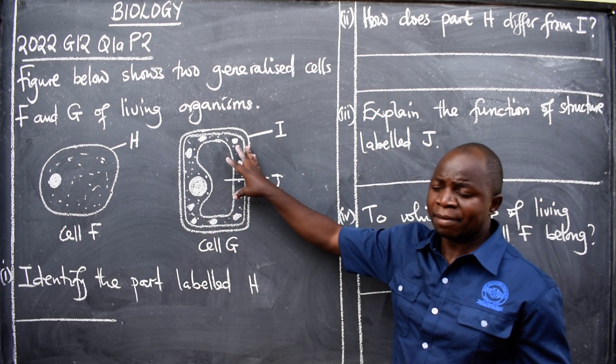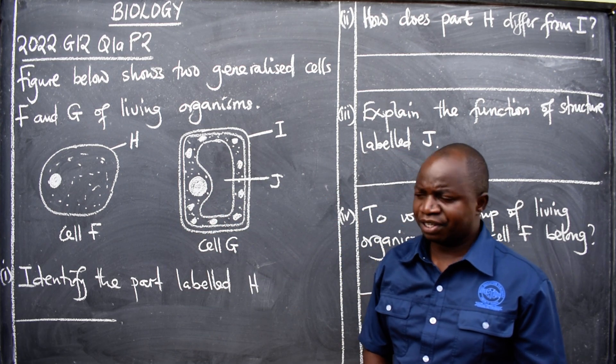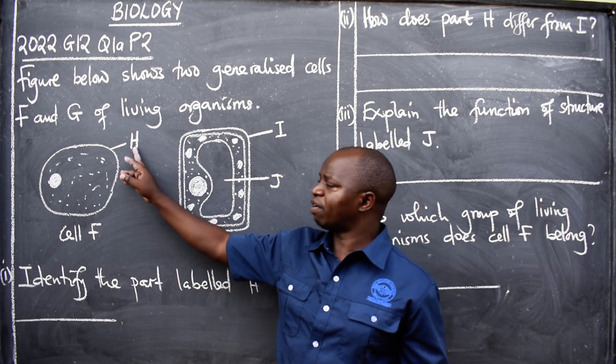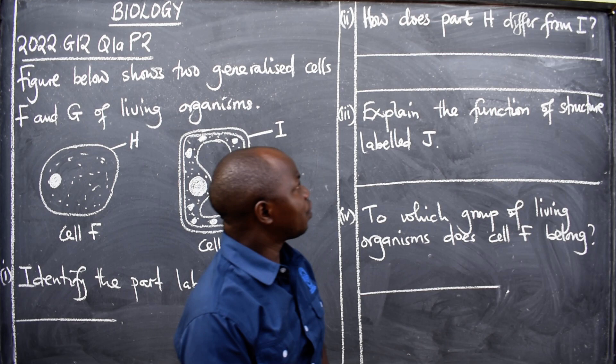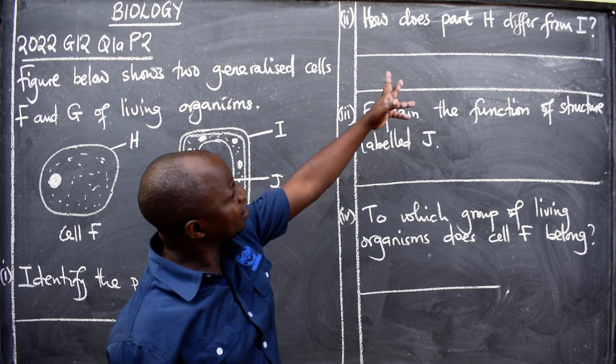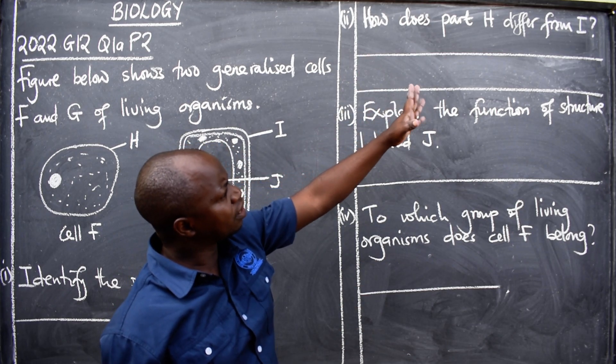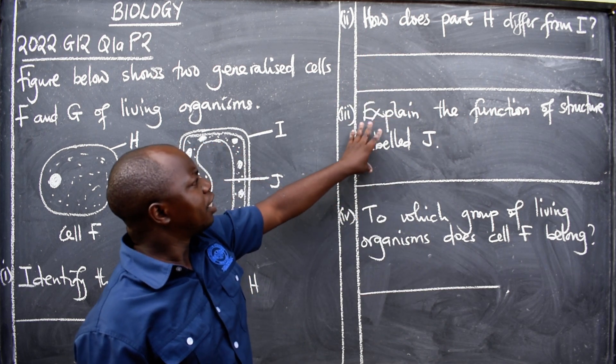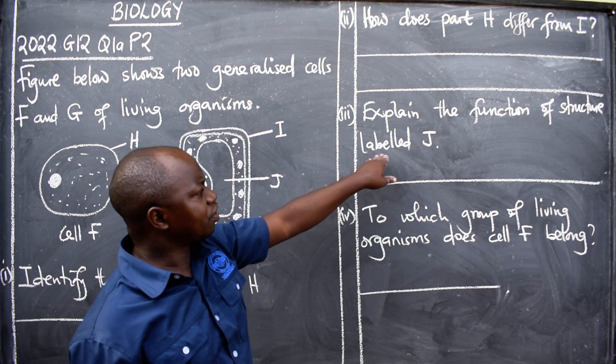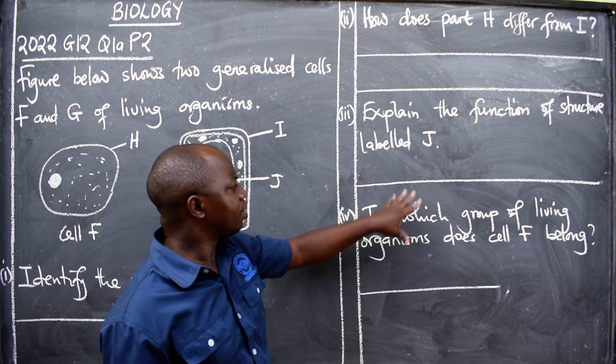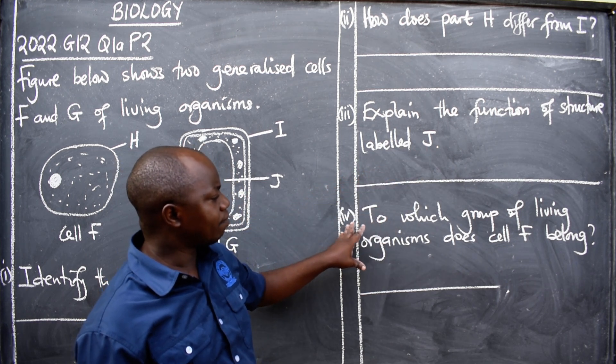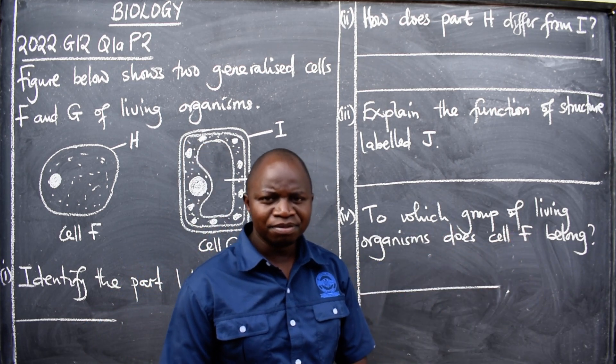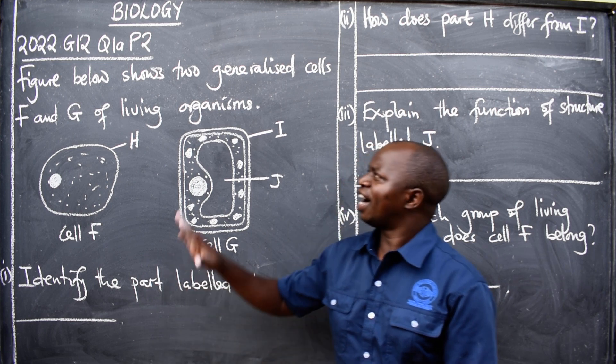So we have cell F here, we also have cell G here. Then we have questions: identify the part labeled H. We have H here. We also have: how does part H differ from I? So you have to explain here. Explain the function of structure labeled J here. To which group of living organism does cell F belong?